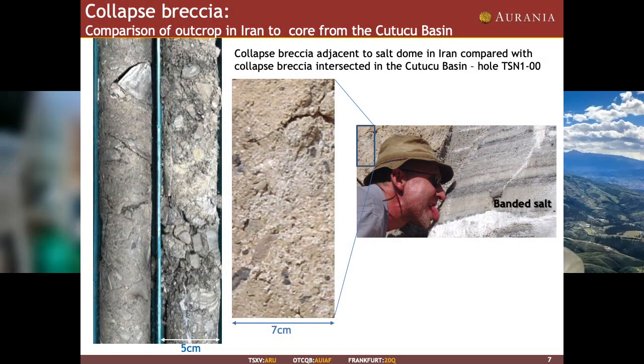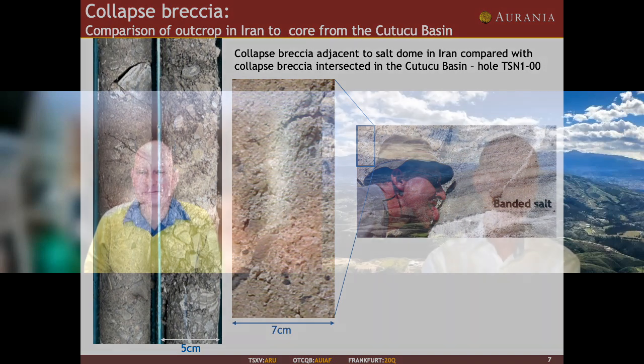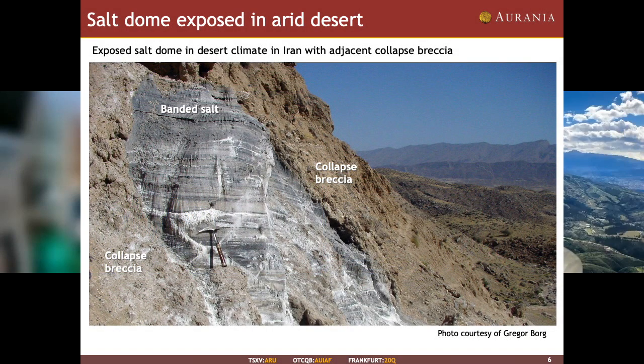In the Iranian desert, since it hardly ever rains, the salt diapirs actually pop up as mountains. You can visit them, knock them with a hammer, and even lick them — the salt is exposed on the surface. On top of and on the flanks of these salt structures, you find a mess of collapsed material that is very similar to what we're finding in the drill core in the exploration area.